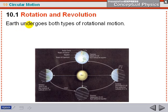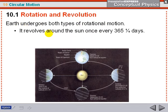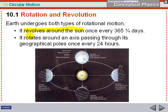Here's the Earth. The Earth undergoes both types of circular motion. It revolves around the sun and rotates about its axis, passing through the geographical poles every 24 hours—one day.